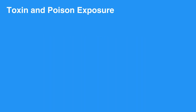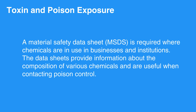The list of toxins and potential poison exposures is extensive and beyond the scope of this video and the CPR handbook. A Material Safety Data Sheet, or MSDS, is required where chemicals are in use in businesses and institutions. The data sheets provide information about the composition of various chemicals and are useful when contacting poison control.